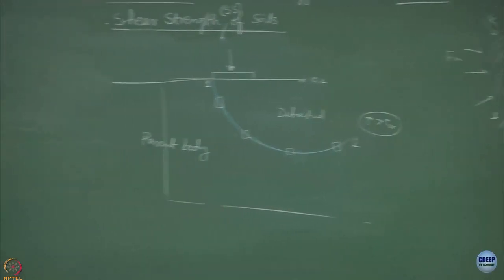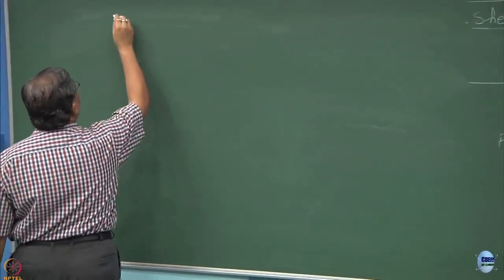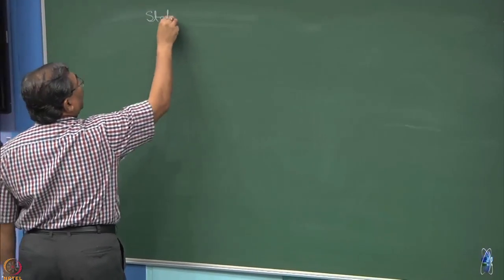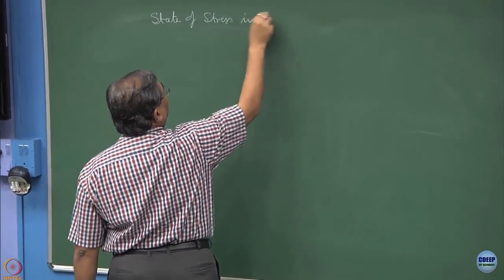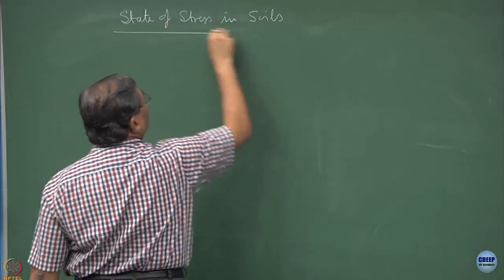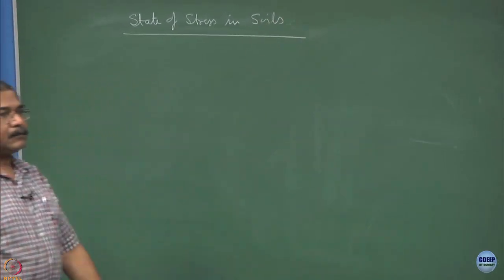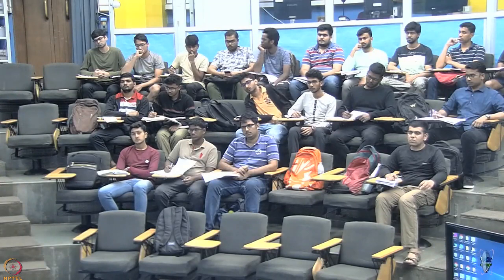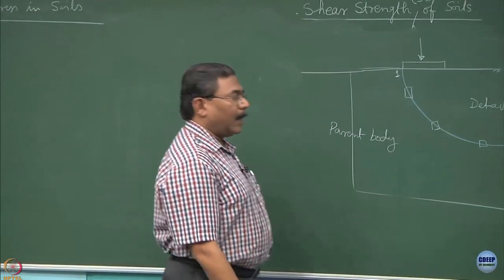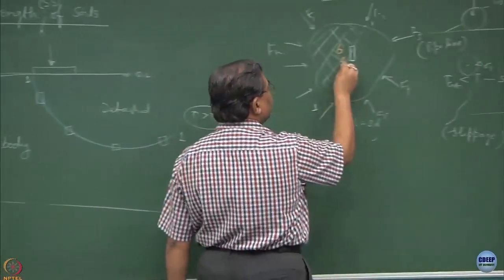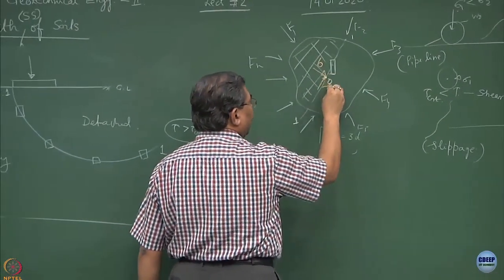Now I will be talking about the state of stress in soils. At this point, what is happening? The end effect of all these forces at this point is there is going to be a normal stress. I write normal stress as sigma and there is going to be a shear stress. I write it as tau.